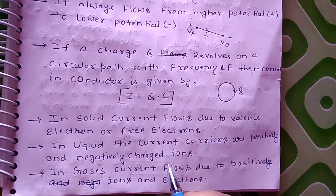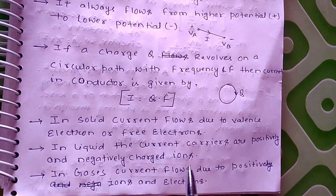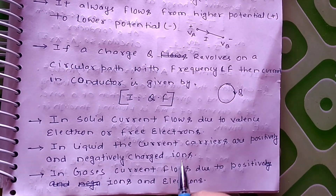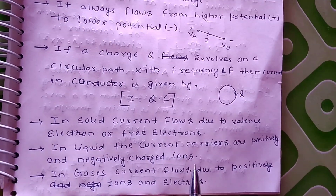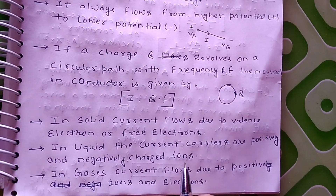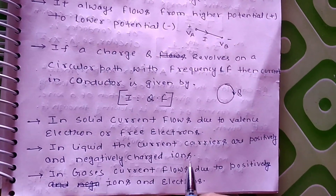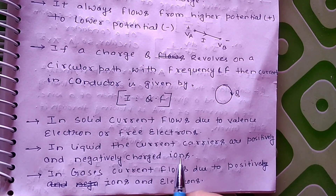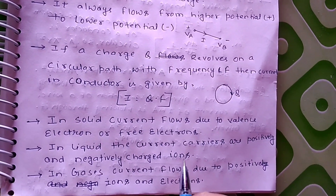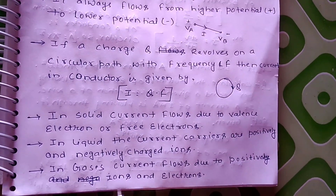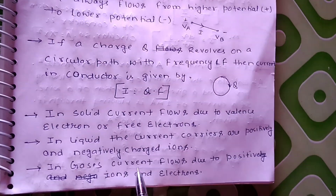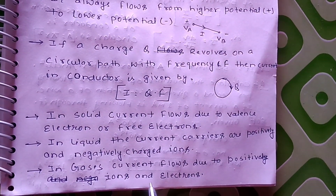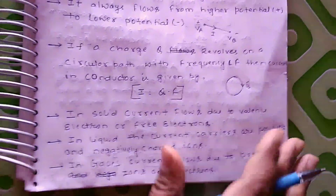Let's take an example. If we have sodium chloride in water — sodium chloride gives Na⁺ and Cl⁻, two ions where Na⁺ is a positive ion and Cl⁻ is a negative ion. So ions work as charge carriers in a liquid medium.